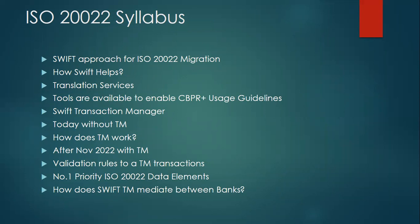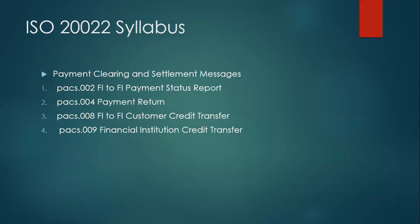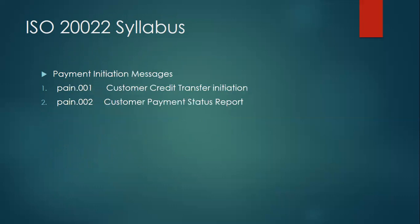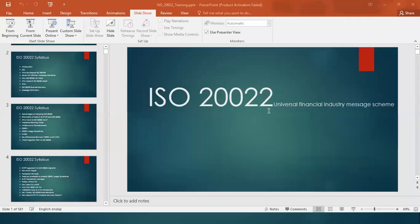We'll understand how SWIFT is helping banks in terms of migration, the different services it provides, what is Transaction Manager, and a lot more. We'll also understand the different channels to be used and how to prepare as a bank to migrate to ISO 20022, key differences between MT and ISO 20022, message structure comparison with MT messages, XML element rules, Business Application Header, and finally the different messages for different business domains — including pacs payment clearing and settlement messages (pacs.002, pacs.004, pacs.008, pacs.009), payment initiation messages (pain.001), and cash management messages (camt.052, camt.053, camt.054, camt.056, camt.057).